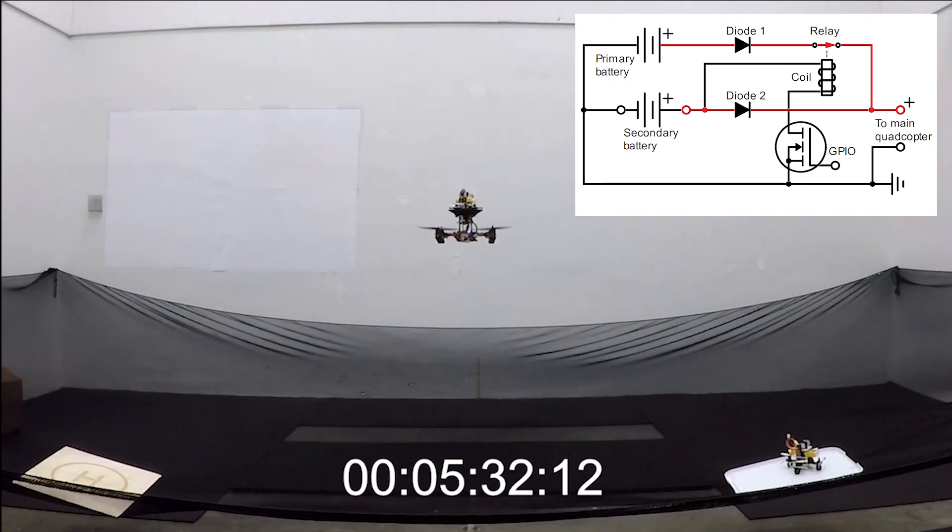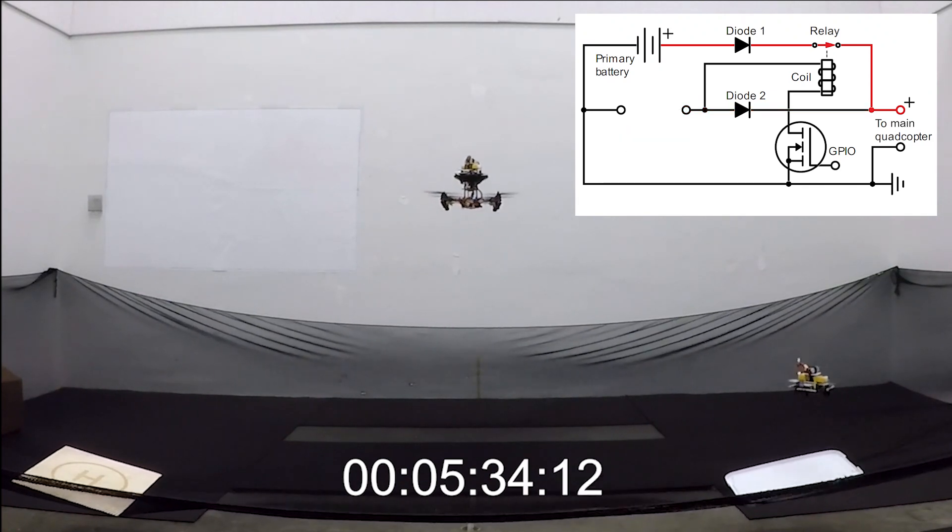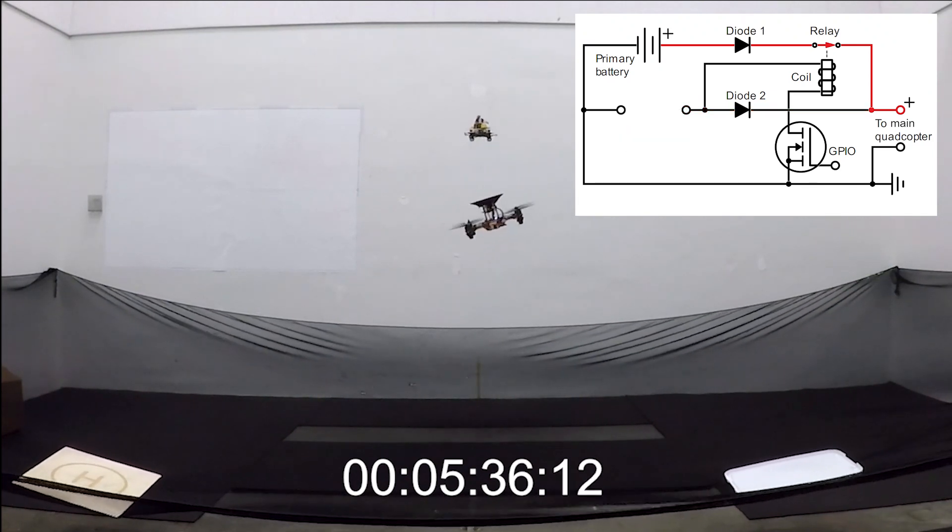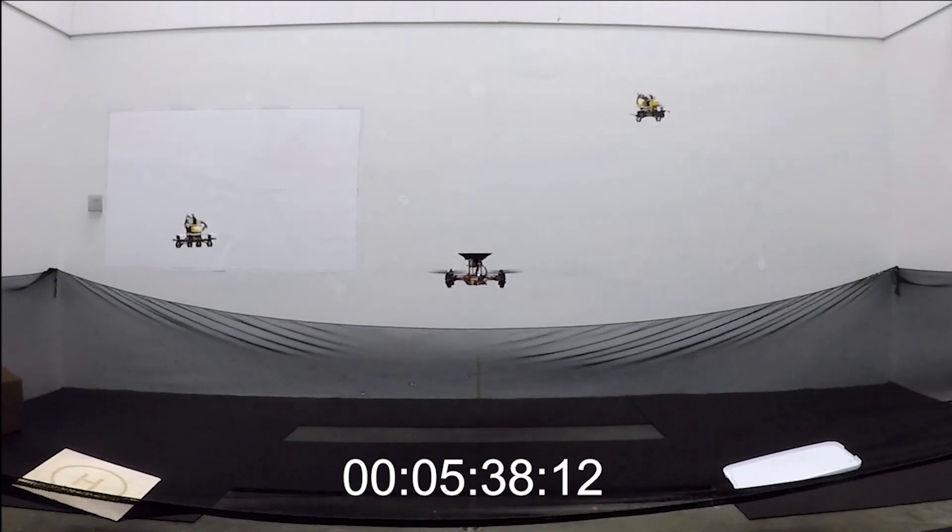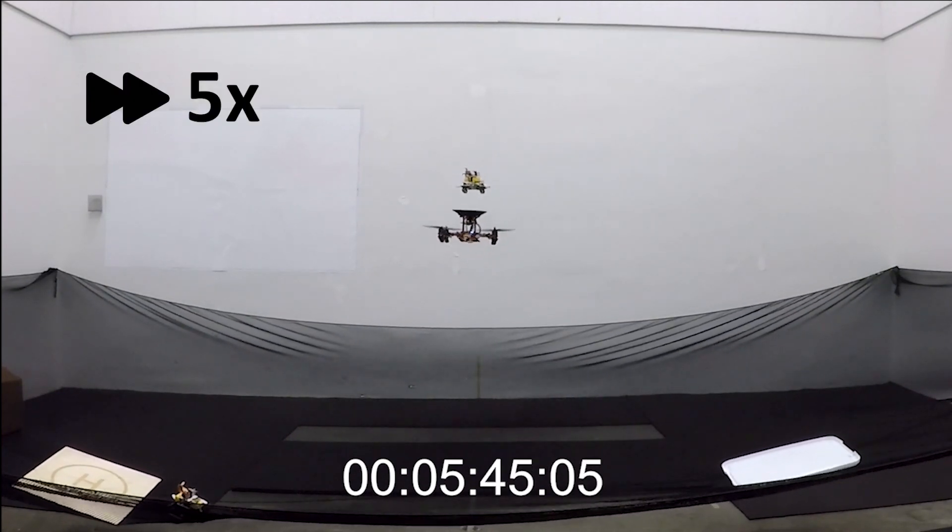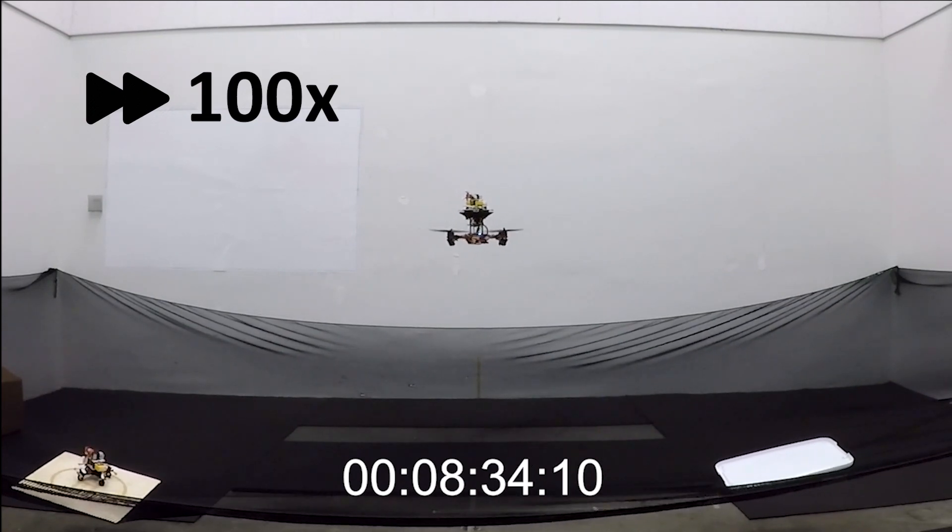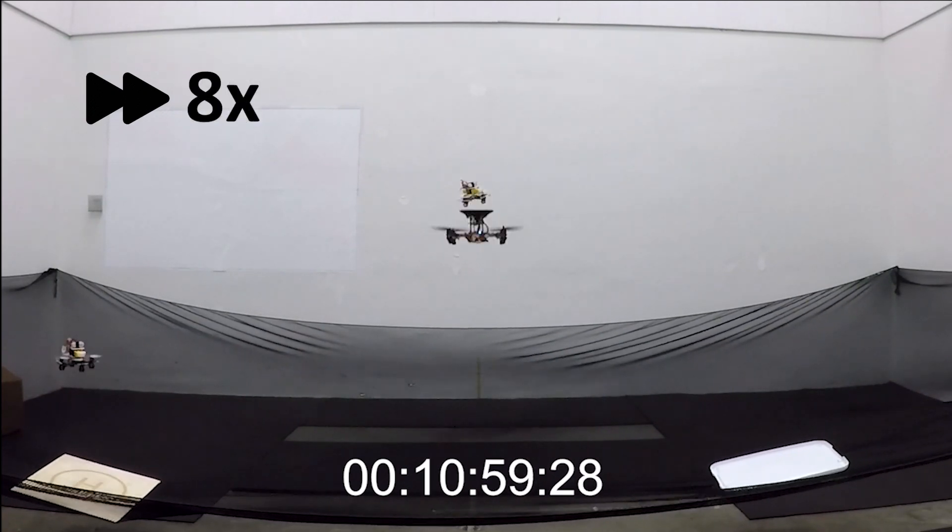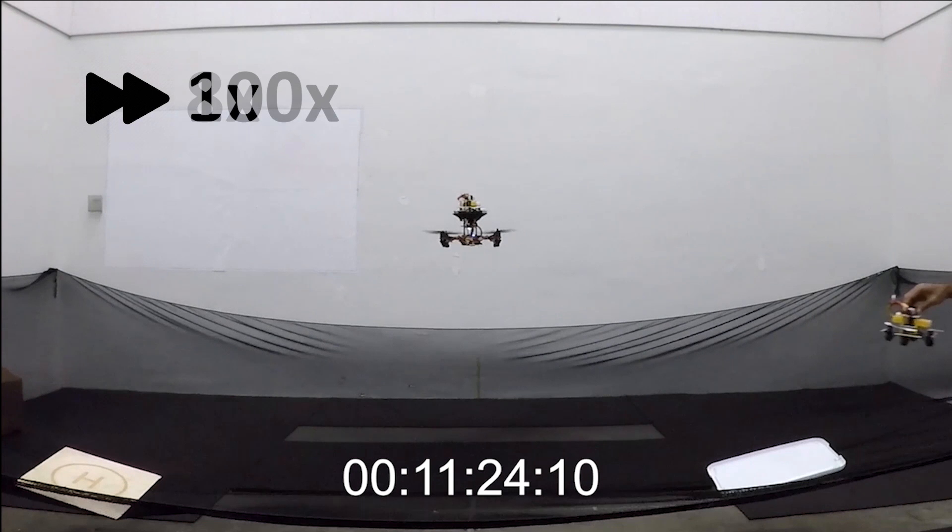Before undocking, we ensure that the relay is closed. The flying battery then undocks and the main quadcopter continues using the primary battery. Another fully charged flying battery is simultaneously commanded to dock on the main quadcopter. We repeat this process until the primary battery is completely discharged.